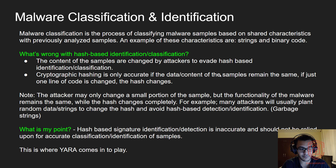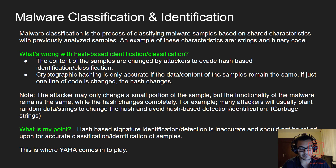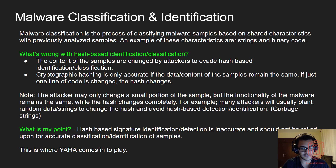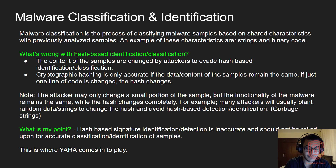What attackers will do is keep the same sample but change the hash by removing or adding pieces of data or strings. One example of this is garbage strings — just a large number of random strings that have nothing to do with the functionality of the malware. They're just there to change the hash, which in turn allows attackers to evade hash-based identification.